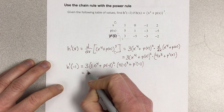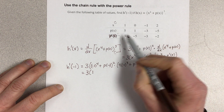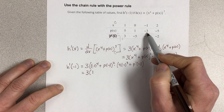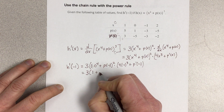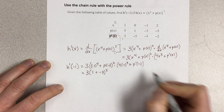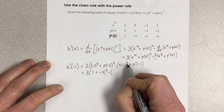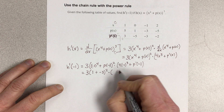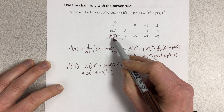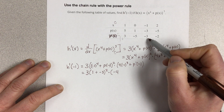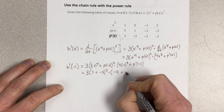So 3 times negative 1 to the 4th would be 1. p of negative 1 — if I go to negative 1 and look at what p is, that would be negative 3. So that's plus negative 3, squared. Then negative 1 to the 3rd power is negative 1, so that would be times 4, giving negative 4. And p prime of negative 1 would be negative 3 as well, so we end up with plus negative 3.